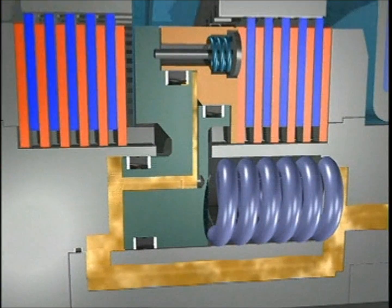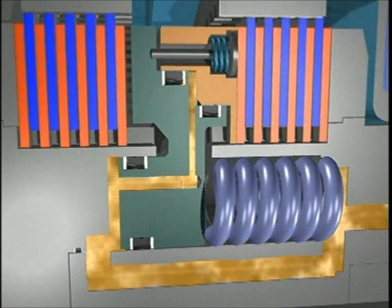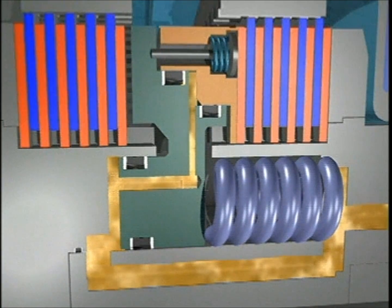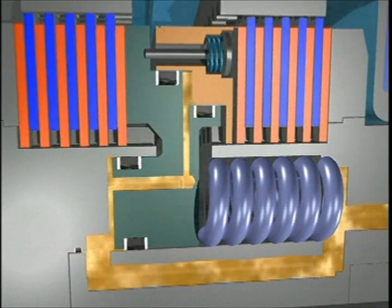The main piston springs push the large piston away from the small piston. Then, both move together until engaging the brake discs. Brake actuation begins at this point.